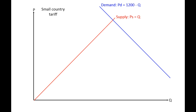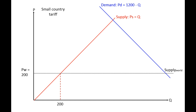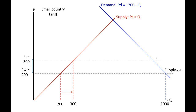Let's calculate with a numerical example. We assume demand is P = 1200 − Q and supply is P = Q. The world market price is 200, giving domestic production of 200 units and consumption of 1000 units. The government's target production is 300 units, so we need to raise the price to 300. We introduce a tariff of 100 units of money, or equivalently 50%. Consumption therefore falls to 900 units.